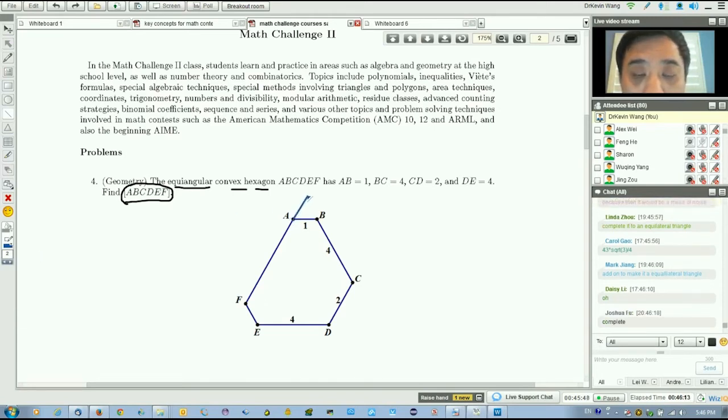Extend the lines to make it into an equilateral triangle. Since it's 120 degrees, when you extend those lines, they will be 60 degrees. You get a big equilateral triangle.